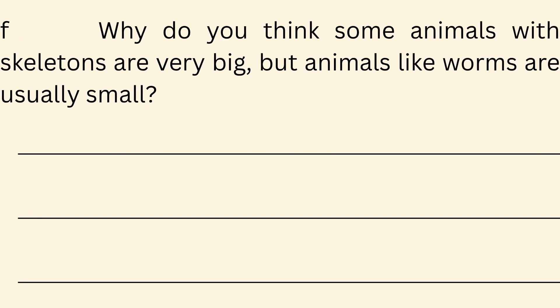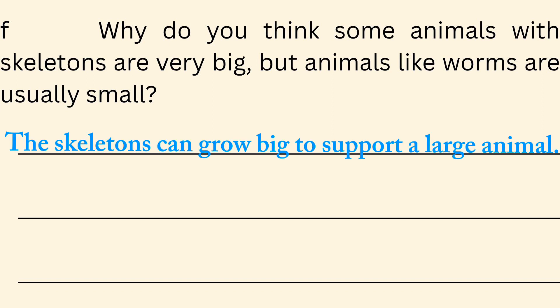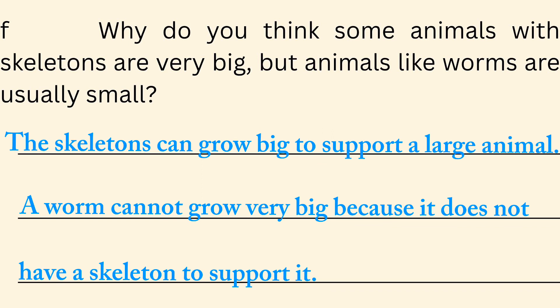Why do you think some animals with skeletons are very big, but animals like worms are usually small? Skeletons can grow big to support a large animal. A worm cannot grow very big because it does not have a skeleton to support it.